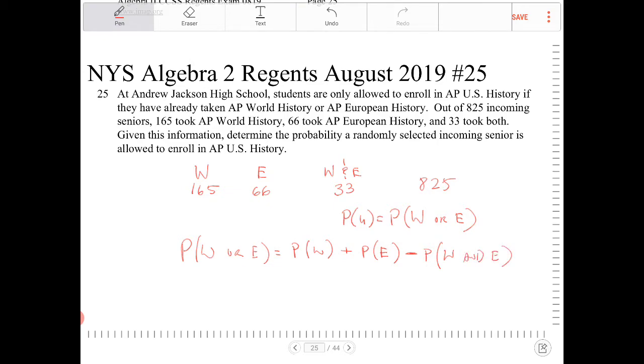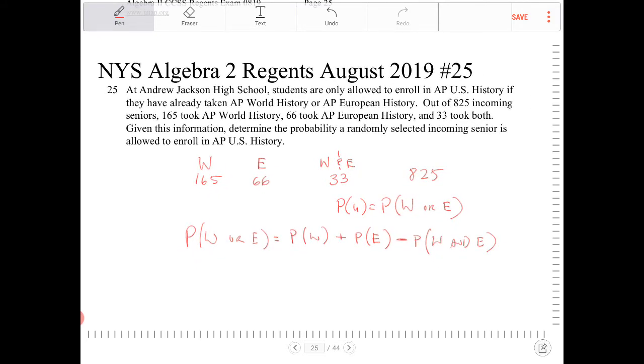So if we apply this conditional probability formula, we can then solve for the probability of students who have taken U.S. History. So looking at this, I know that P, W is 165 over the total, which is 825.